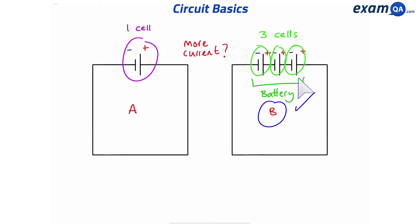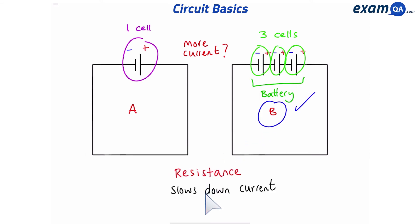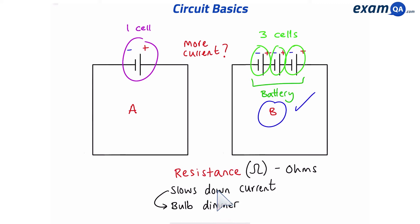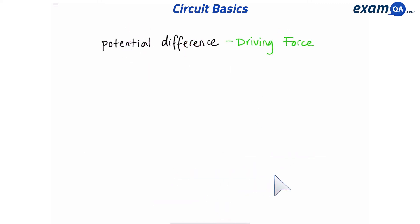Resistance is a mean thing — it slows down the current. For example, if you have a bulb in your circuit, the more resistance there is, the dimmer your bulb will become. Resistance is measured in ohms.